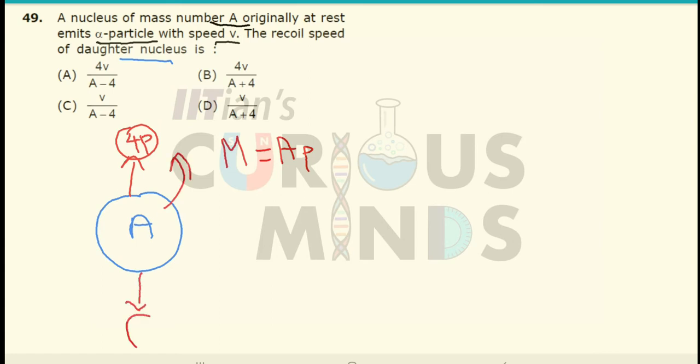It means that the remaining nucleus will head in the opposite direction. Let the velocity over here be equal to V. Let the velocity over here be equal to V dash. Its mass will be equal to A minus 4P.